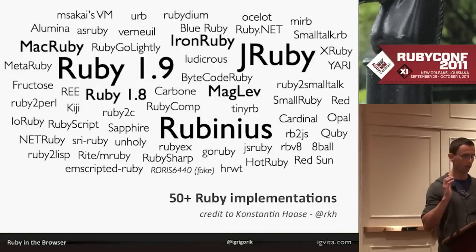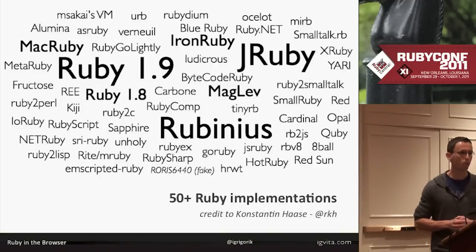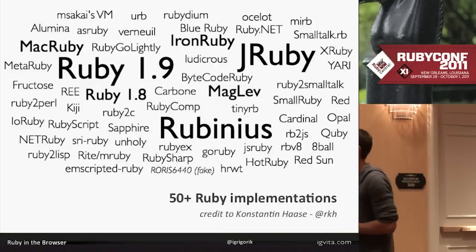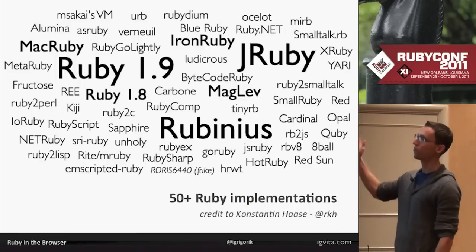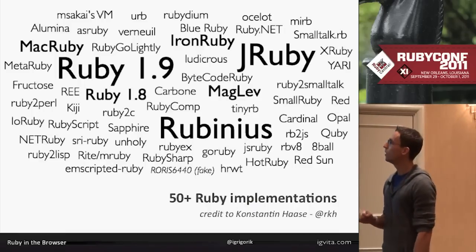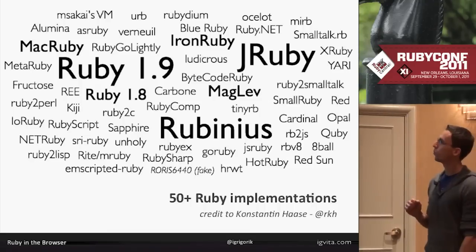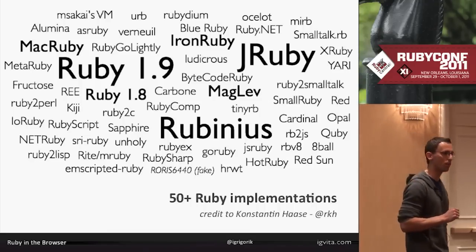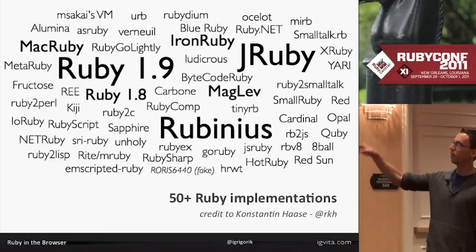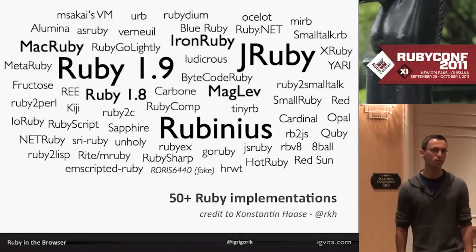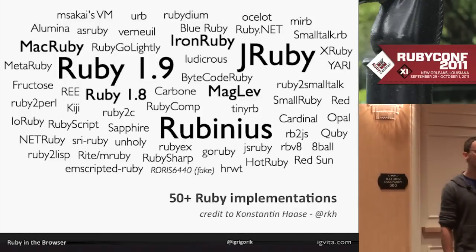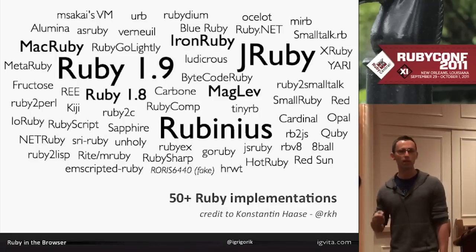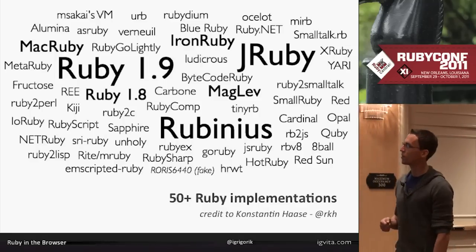Even if you look at the Ruby ecosystem — I stole this slide from Constantine from his talk yesterday — these are all the different implementations of Ruby in various states of incompleteness. I'm pretty sure that 90% of these won't even run any semi-reasonable Ruby code. But that's not the point. The point is people are experimenting, trying different things, trying to see what sticks.